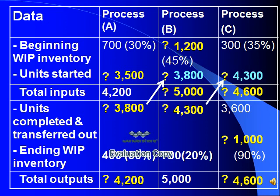In process B, units completed and transferred out from process A equal units started in process B, so units started in process B are 3,800 units. Total outputs in process B are 5,000. So 5,000 minus 700 ending inventory equals units completed and transferred out of 4,300 units. Total outputs equal total inputs, so total inputs in process B equal 5,000. Minus units started of 3,800 equals beginning inventory of 1,200 units.